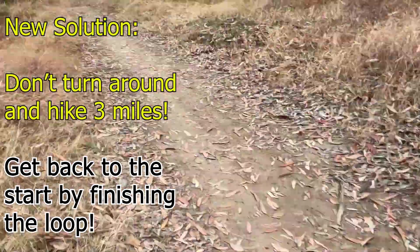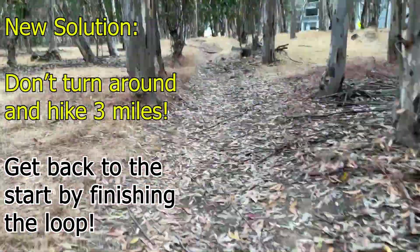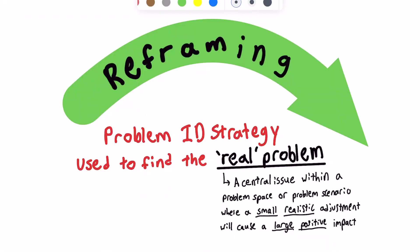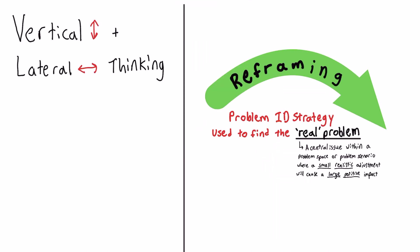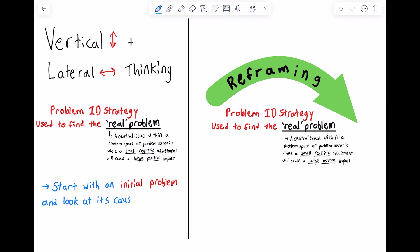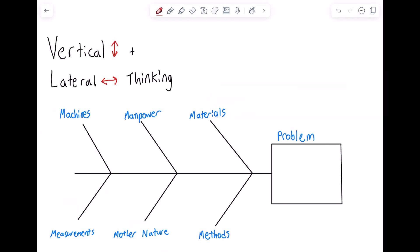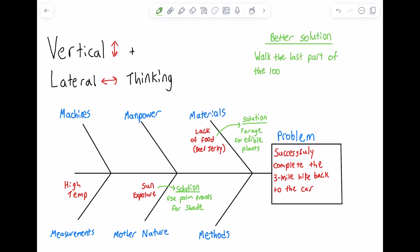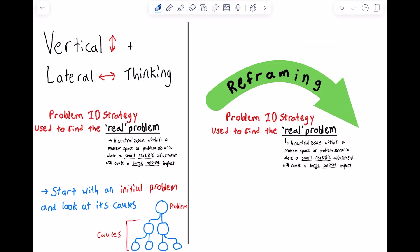Originally we were solving the problem of how to complete the three-mile hike back, but when we pivoted our focus to solving the new problem of how to get back to the car without hiking three miles back, it led to new, more effective solutions. Vertical and lateral thinking strategies like the five whys, why else, and a fishbone diagram help identify the real problem by looking at causes of an initial problem statement. We could have done a fishbone diagram identifying causes like high temperatures, sun exposure, and lack of food, and come up with solutions like using palm fronds for shade or foraging for edible plants such as cactus. But none of these are as simple as walking the last part of the loop.